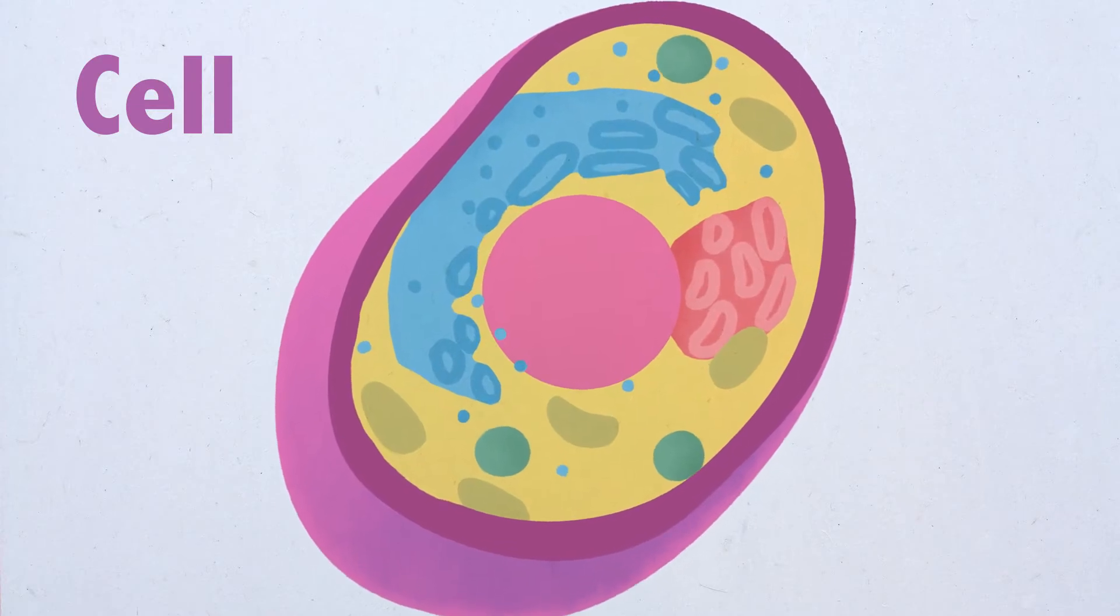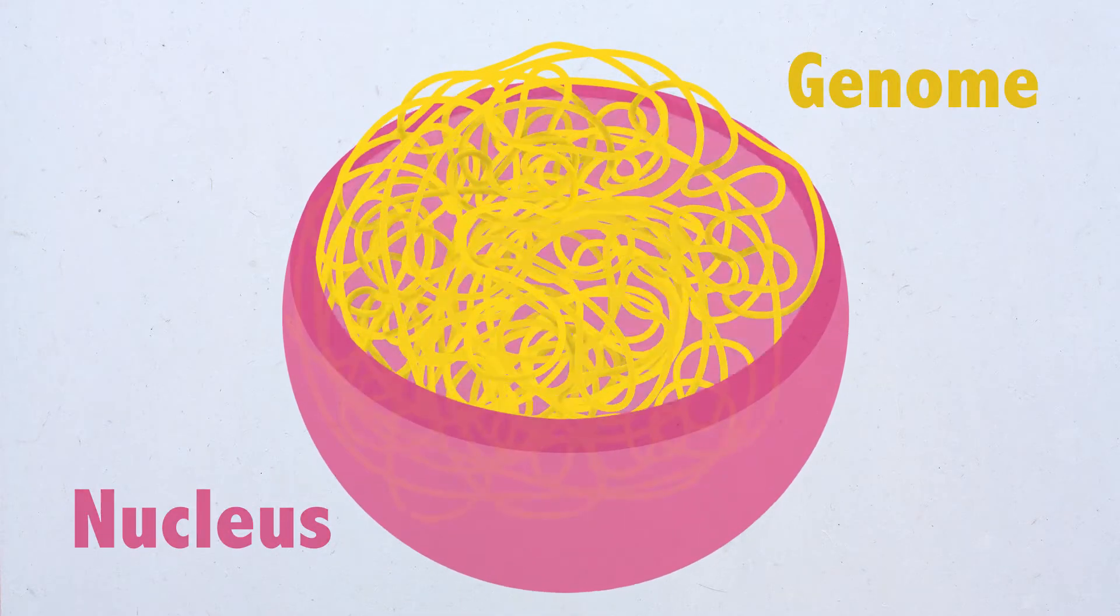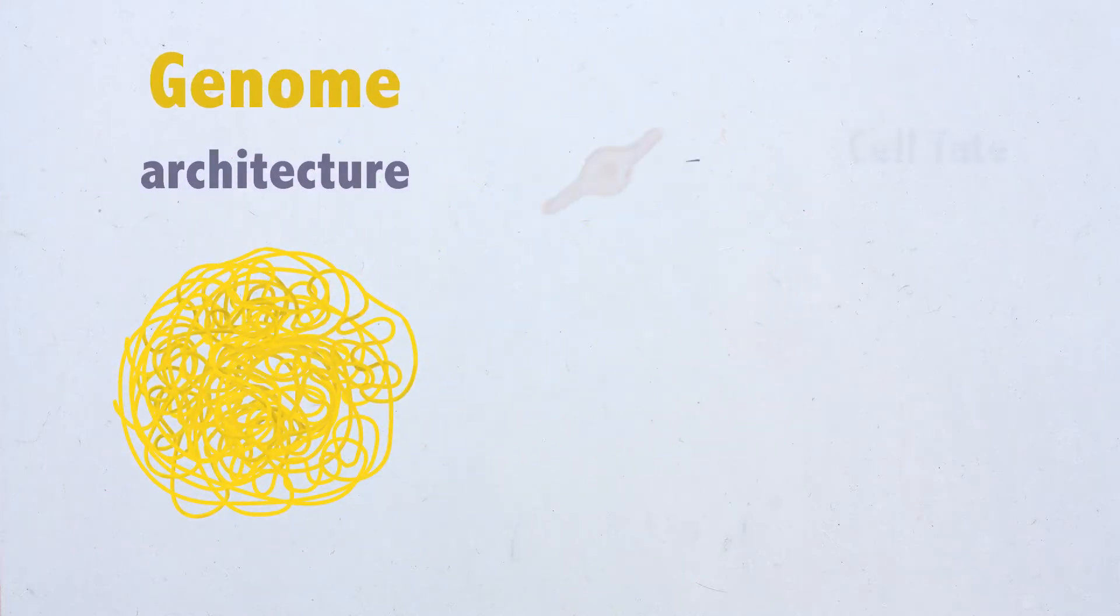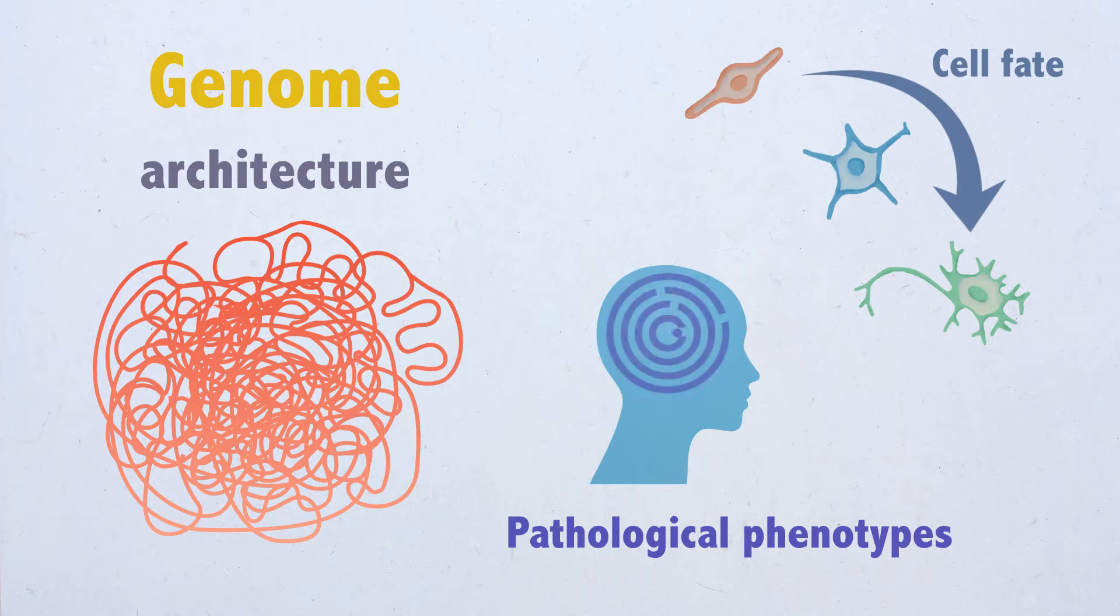3D genome organization was shown to be intimately linked to its biological function. Changes in nuclear architecture can affect cell fate, and disruption of genome topology can result in pathological phenotypes.